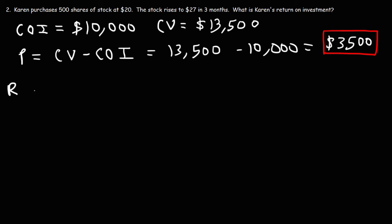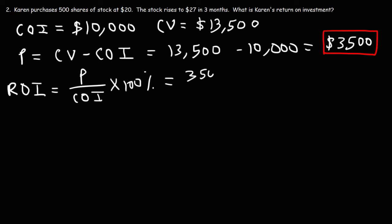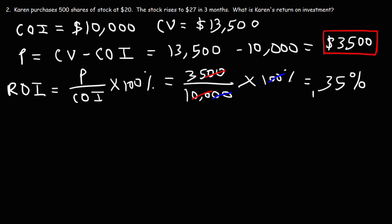So now let's calculate the return on the investment. It's going to be the profit divided by the cost of the investment times 100%. So Karen earned a profit of $3,500 and she invested $10,000. Here's a quick way to get the answer without a calculator: we can cancel two zeros, then cancel another two zeros, so it's 35 over 1. So this is going to be 35%. That's her ROI in a three-month period.